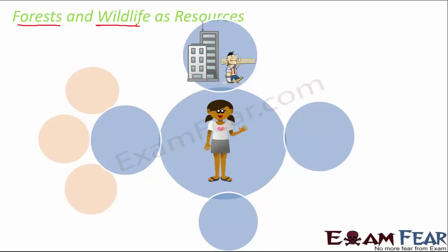From forests we get wood, which can be used as fuel and for various construction work. Food is also a very important component — we get food from trees and forests. For example, dairy products like milk, butter, cheese, and paneer are obtained from dairy animals like cow, goat, and buffalo, which are also part of wildlife.